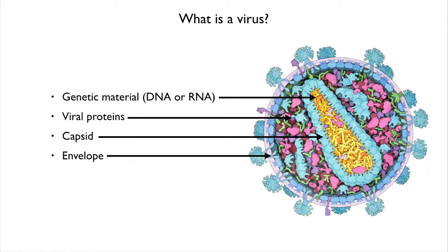So what is a virus? A virus is defined by its components. A key part of the virus is genetic material — DNA, which I'm sure most of you have heard of, or its close relative, another molecule called RNA. That genetic material is surrounded by viral proteins. Typically, some of those proteins will assemble to protect the genetic material in a structure that we call the capsid.